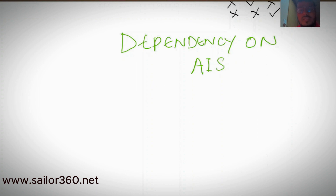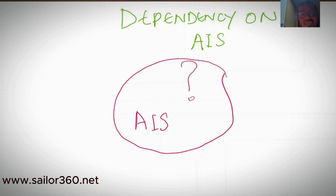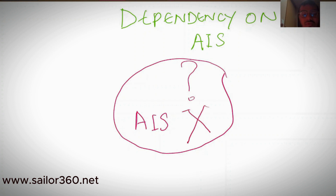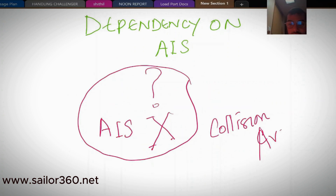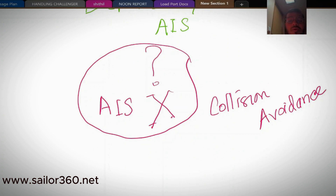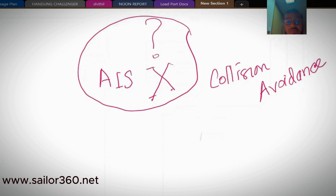AIS provides valuable data that helps in navigation, but unfortunately we cannot depend on AIS for collision avoidance. You will not find a single word about AIS in COLREGS. Let me explain why we cannot depend on AIS for collision avoidance.